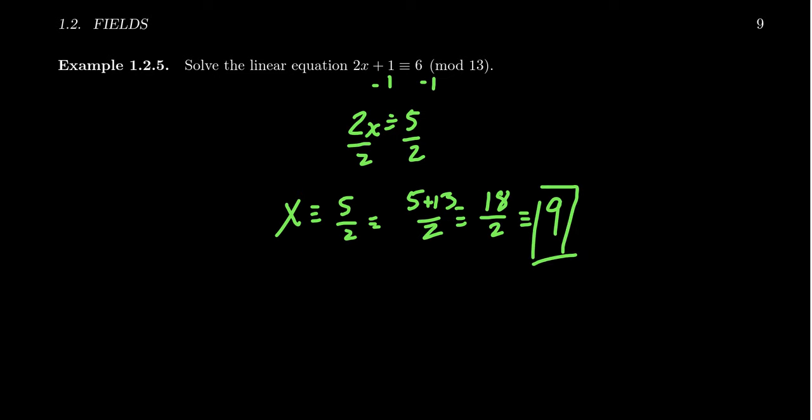And so that gives us the solution. We can check our solution by plugging it back into the original equation. Notice if we take 2 times 9 plus 1, this would equal 18 plus 1. Notice we can reduce the 18 now or we can do it later. Adding 1 is not too problematic.